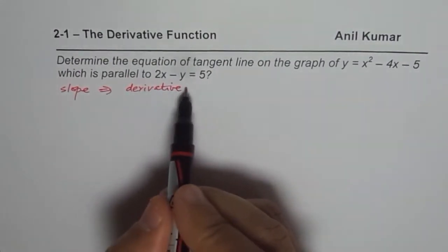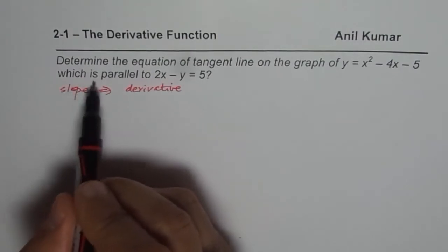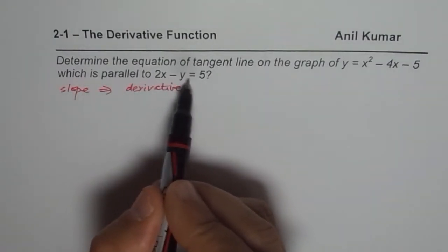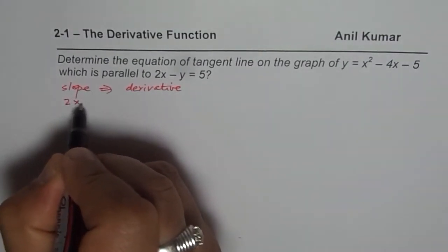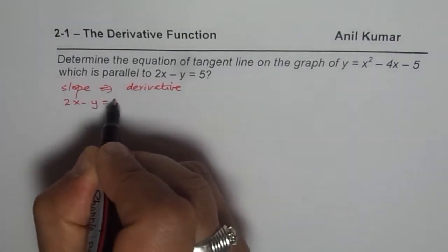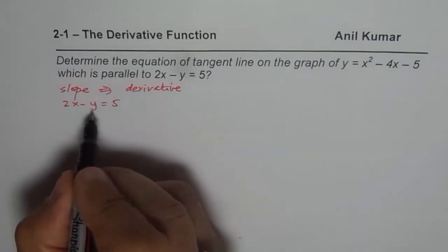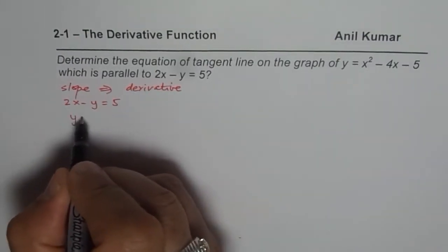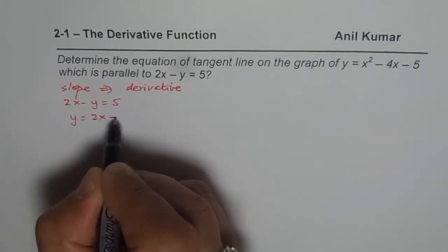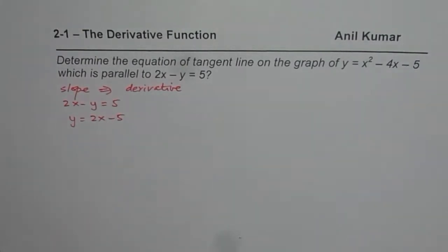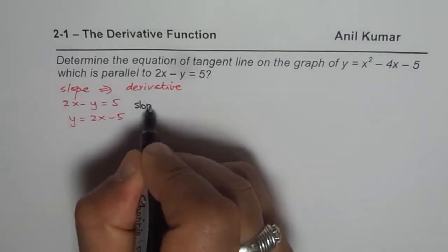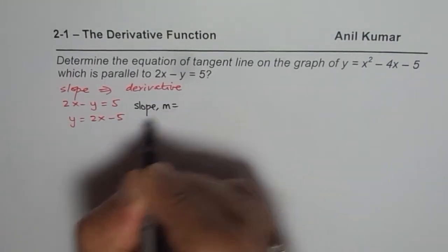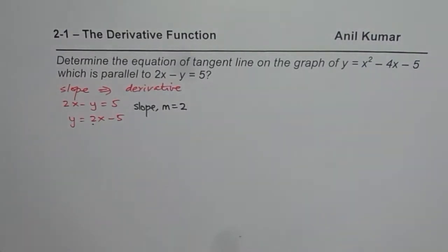And here we are given that slope. It says which is parallel to 2x - y = 5. So when the line is parallel to 2x - y = 5, then what is the slope? Let me rearrange. I can write y = 2x - 5. And from here, clearly we get the slope m = 2. Slope is 2, comparing the line with slope and intercept form.